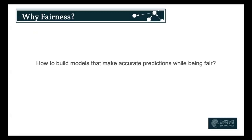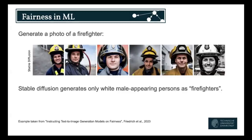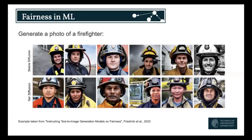How do we make our models fairer? Another example showing these biases in generative models: if we ask stable diffusion to produce a photo of a firefighter, we get white male-appearing persons. Clearly, maybe it represents the distribution in our training data, but it under-represents some minorities. It would be better if we could tell our model to also include a diverse set of people in generation.